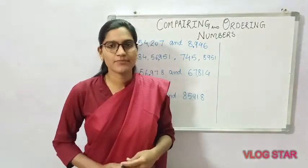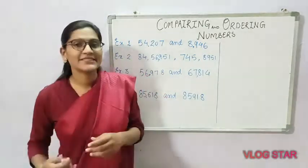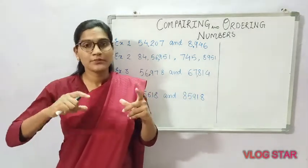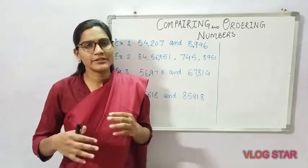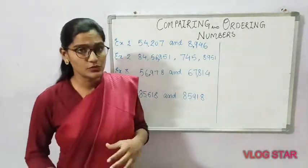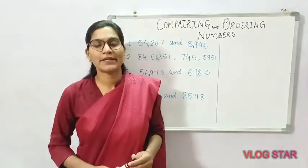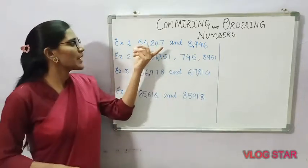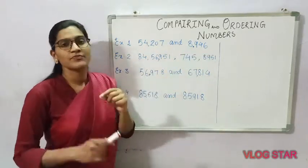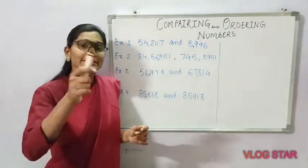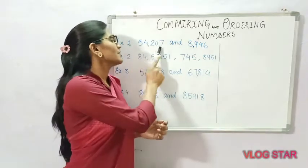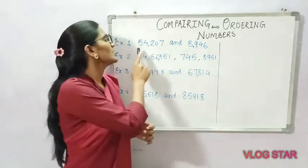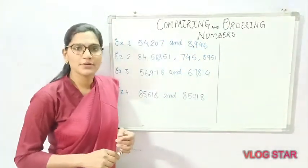So how do we compare numbers? In your previous class you compared shorter and bigger numbers, smaller and bigger numbers. Just like that, but now you are in a bigger class so there are some rules. The first rule is: if you have a five-digit number and a four-digit number given,